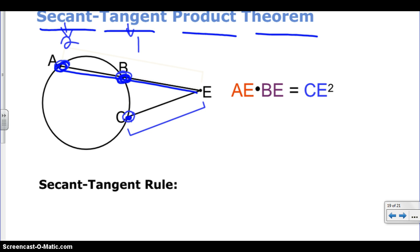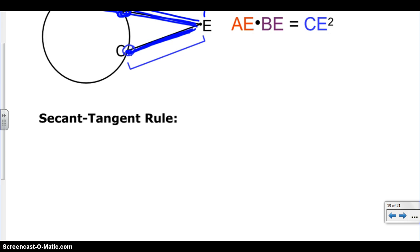And our formula basically says the whole piece of that secant, so AE, times the outside piece, which is BE, equals our tangent piece squared, which is that CE. So basically things you've seen before, we're just combining them together. All right, so let's see this baby in action.